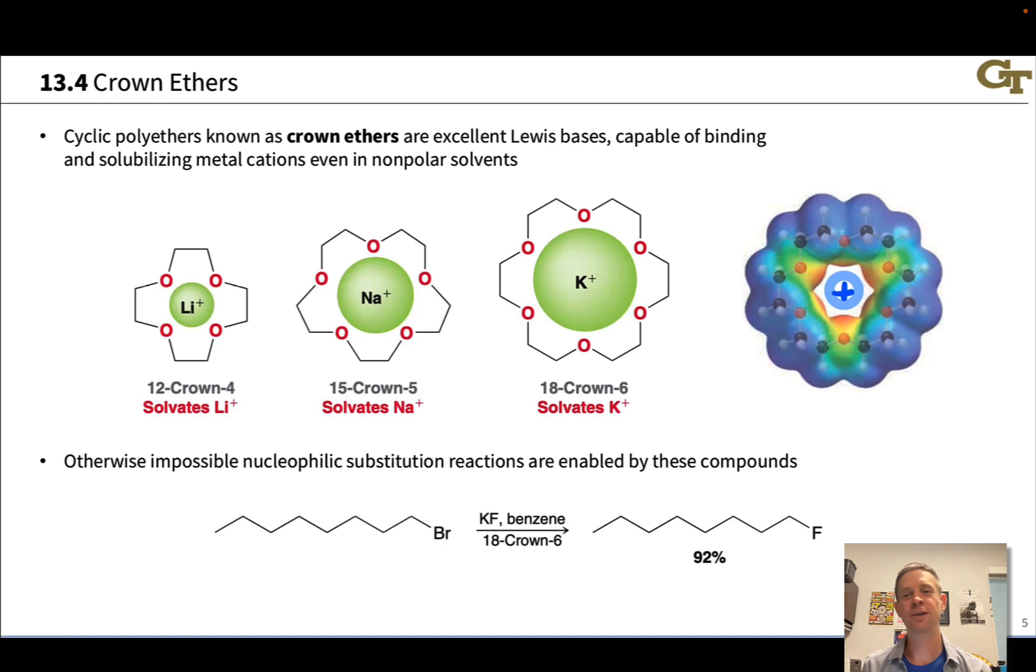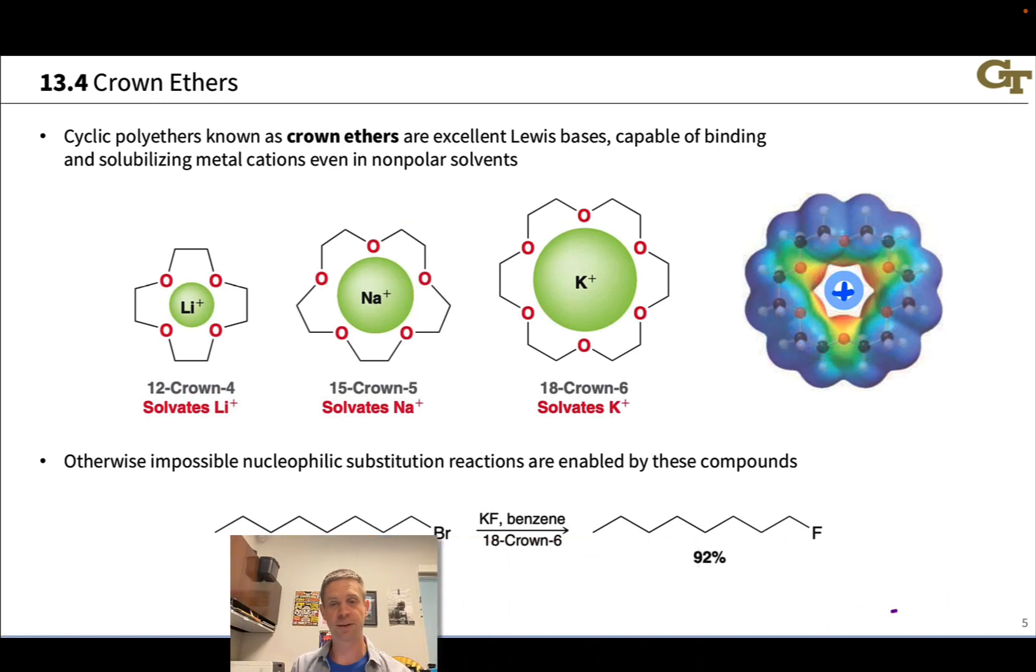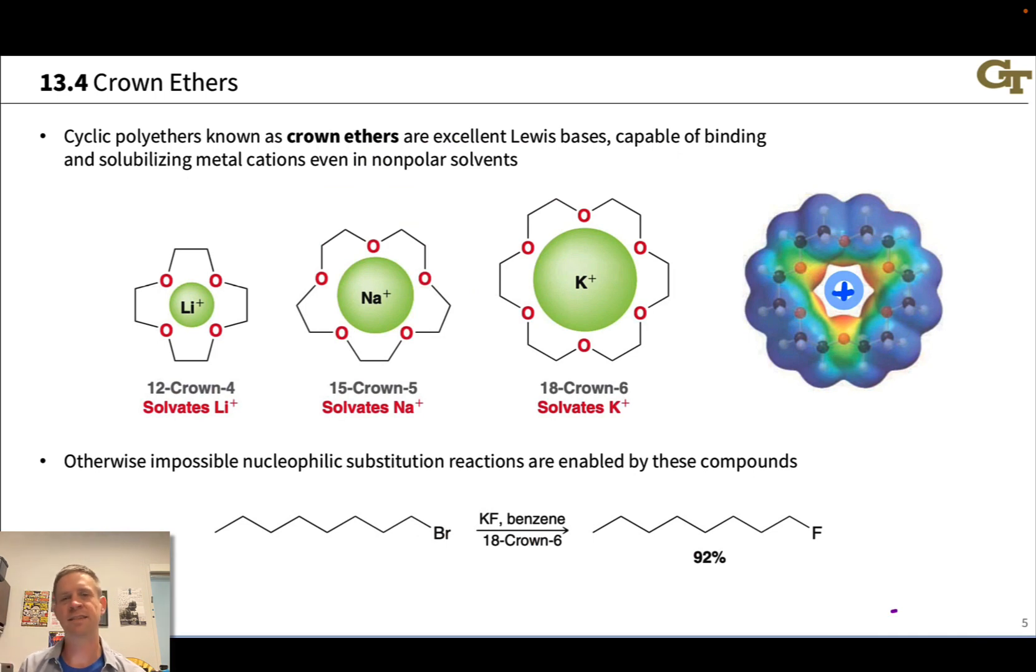This slide just touches on a rather unique class of polyethers known as the crown ethers. These were developed as cationic chelators. They contain a large number of these ether oxygens that can grab onto a metal cation at the center. You can see an electrostatic potential map of a crown ether right here, and we can see that in the center we've got a very Lewis basic region in here that can fit a Lewis acidic cation right in the middle there. And crown ethers in solvating these cations can bring the anions into solution in solvents that would otherwise not be able to dissolve the ionic solute.